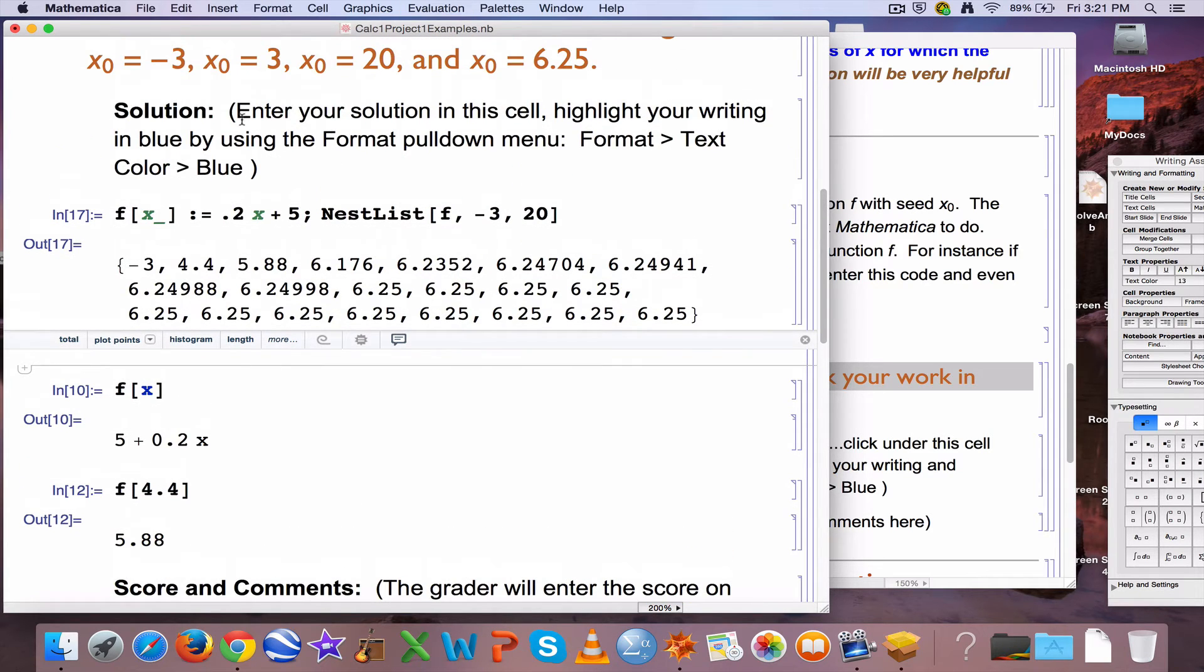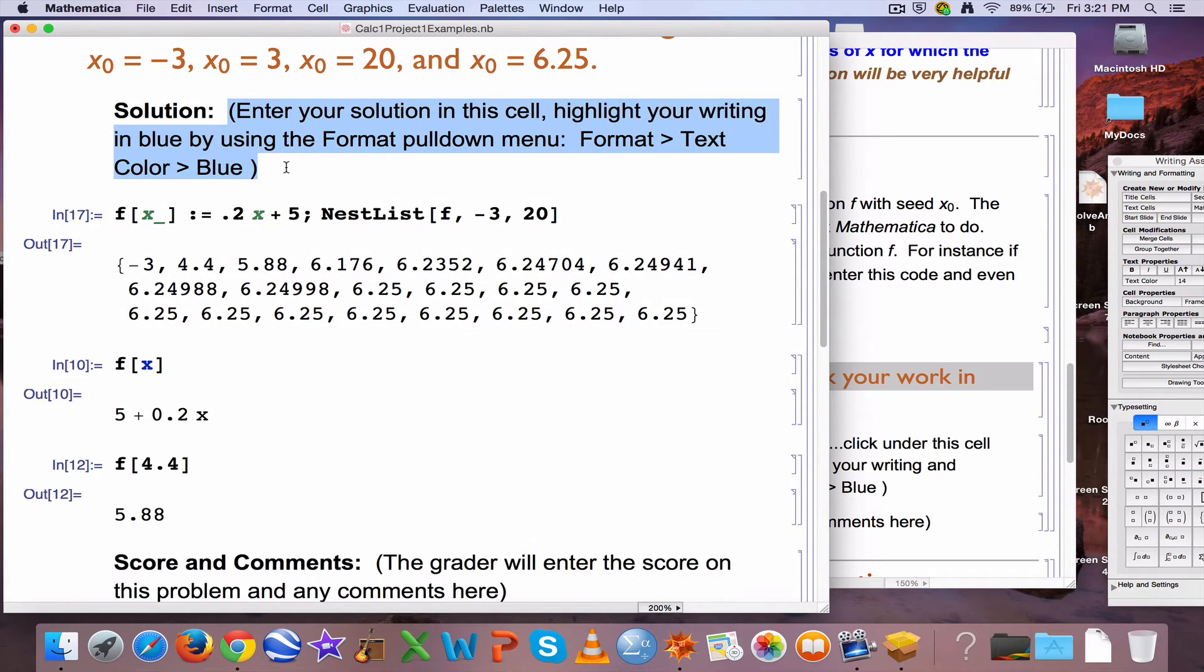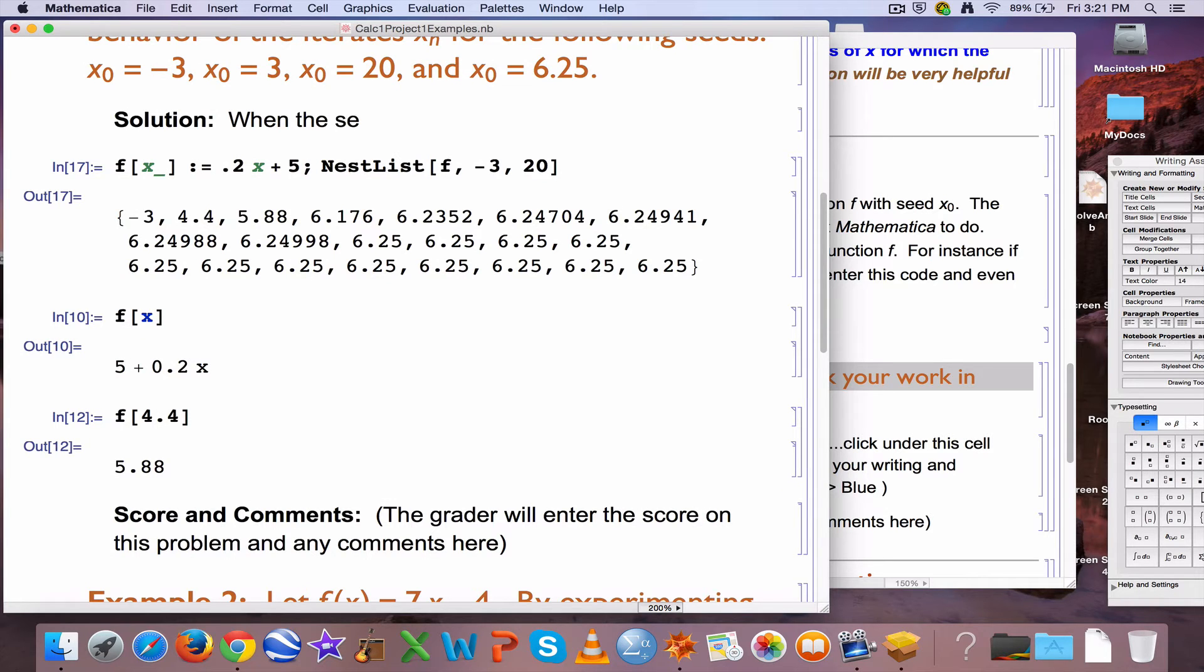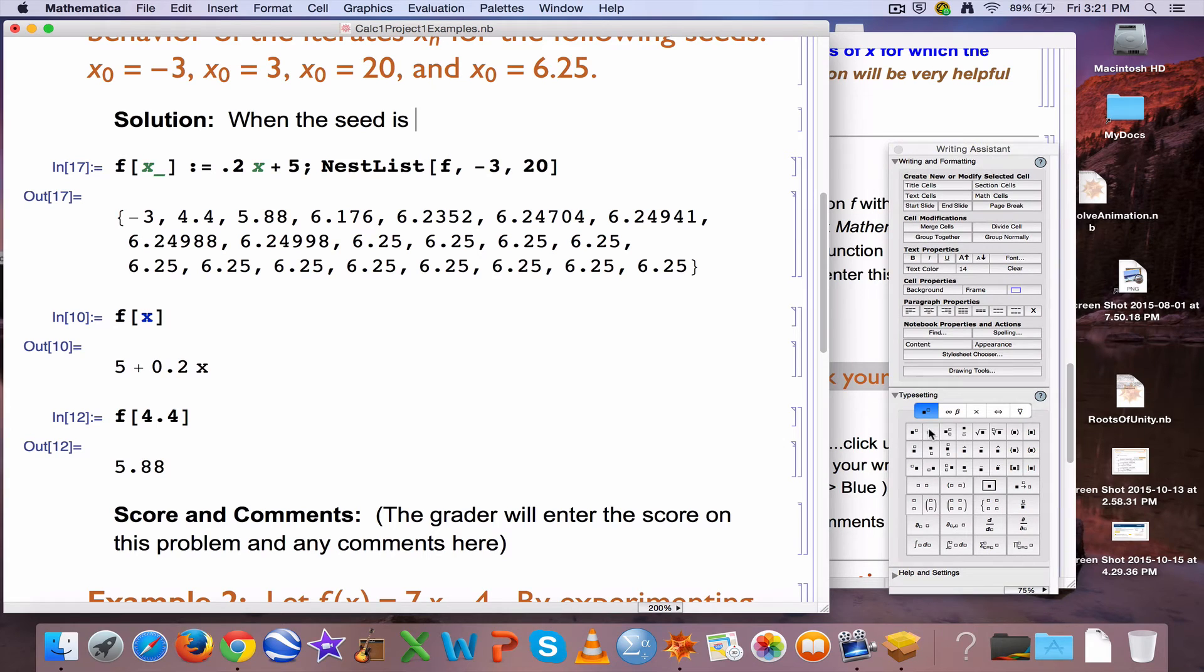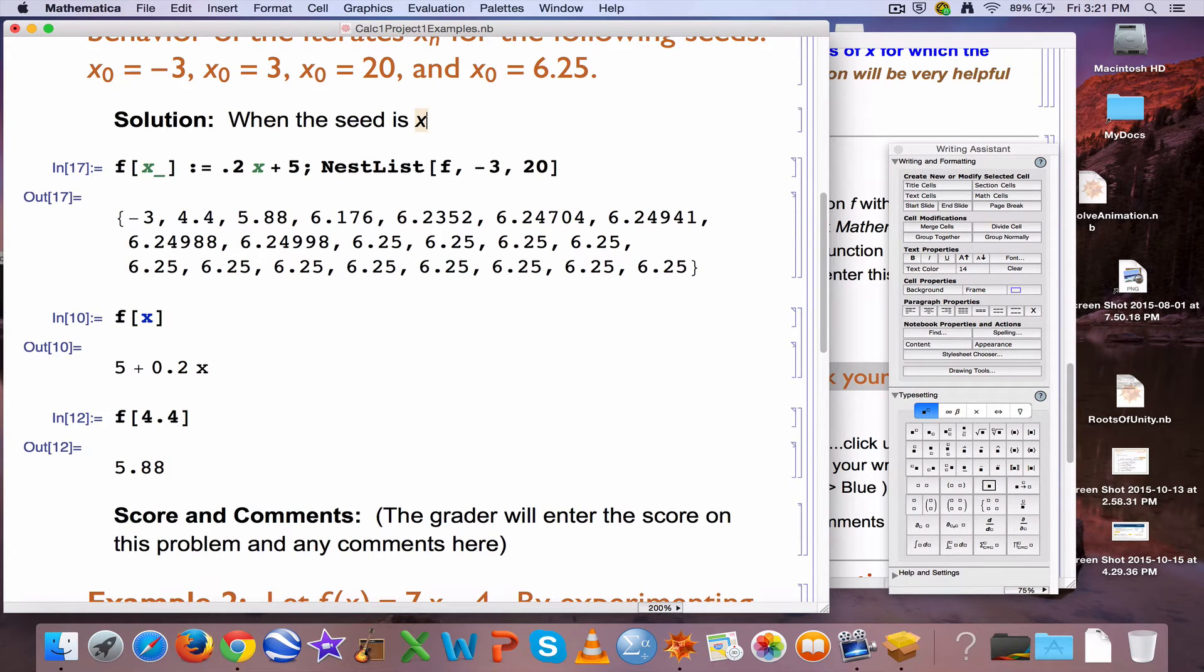Okay? There's the way we saw it. And as far as describing what happens here, you could say something like this. When the seed is x0 equals negative 3, you can use this writing assistant to make subscripts, for example. Click that button, go x. I'm going to press it twice sometimes.